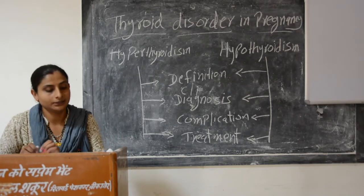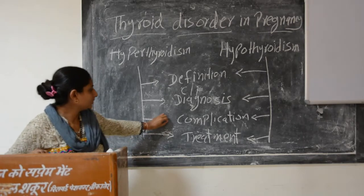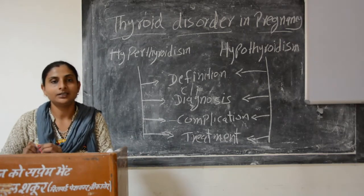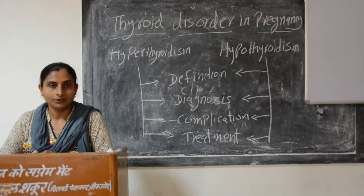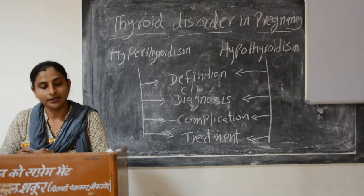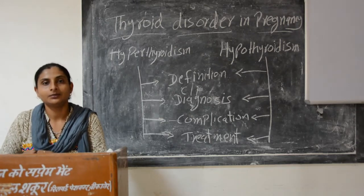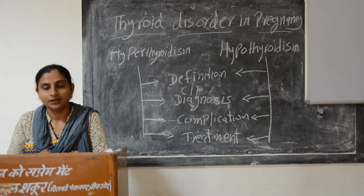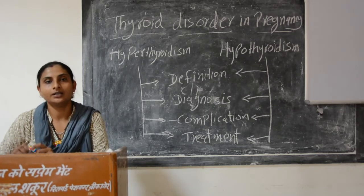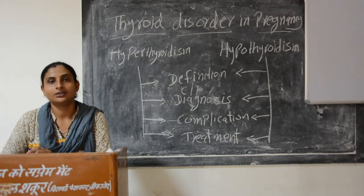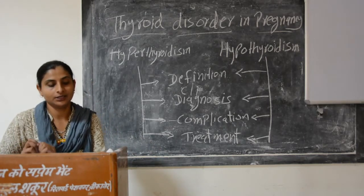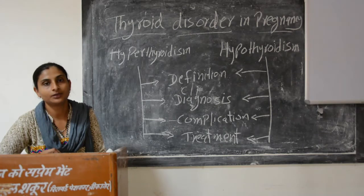Complications of hyperthyroidism in the mother include infertility, abortion, preterm labor, high risk of preeclampsia, and cardiac failure, because cardiac muscles become weak. Thyroid storm is also a possible complication.